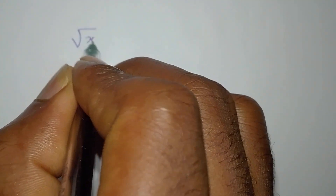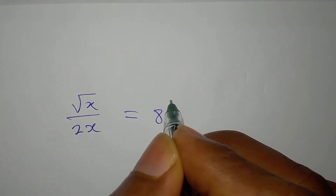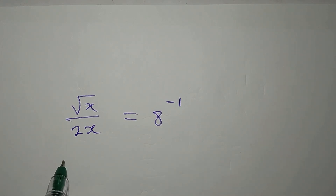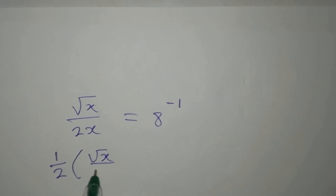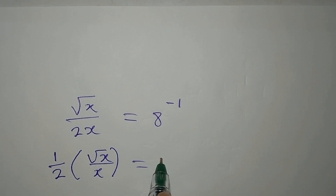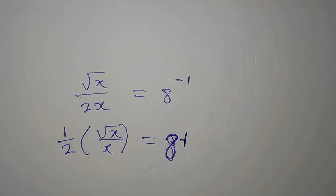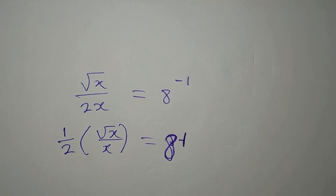Now let's apply the second method and see whether we get the same solution. The equation is still square root of x over 2x equals 8 to the power of negative 1. The left side can be rewritten as 1 over 2 times root x over x, which equals 1 over 8.